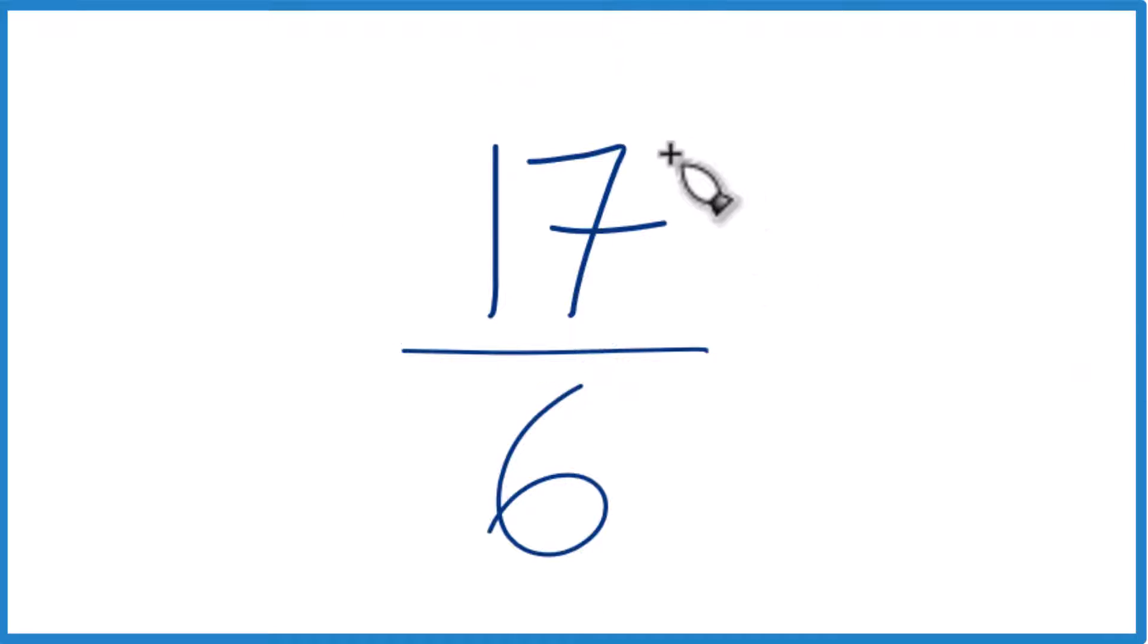It's an improper fraction because the numerator is bigger than the denominator. We can't really simplify this any further since the only number that goes into 17 and 6 evenly is 1. So it's already simplified, but we can convert 17/6 to a mixed number.